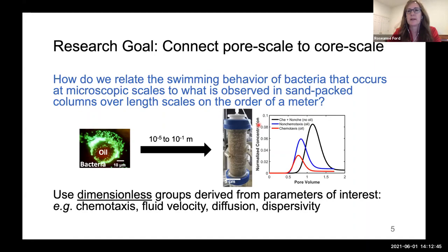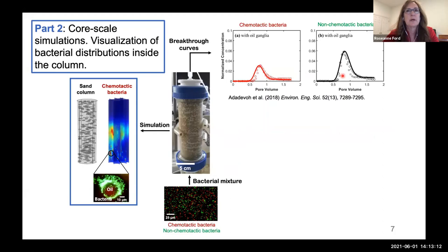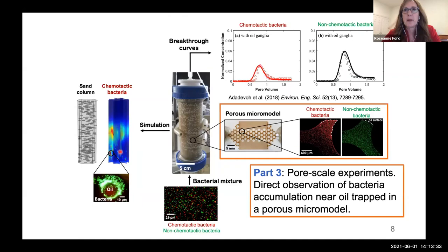To briefly outline my talk: in part one I'll describe the differences in breakthrough curves for chemotactic and non-chemotactic bacteria from sand columns containing residual chemoattractants. These differences motivated us to look inside the column. In part two I'll describe computer simulations of our experimental system, which allowed us to visualize bacterial and attractant concentrations inside the column. In part three we used a micromodel to allow direct observation of bacteria in the vicinity of trapped oil contaminants to confirm what our simulations suggested.